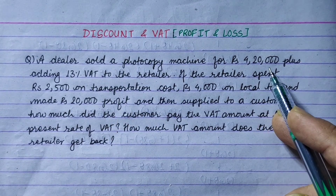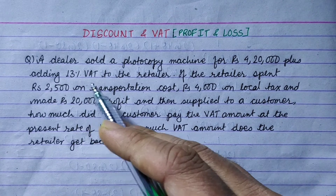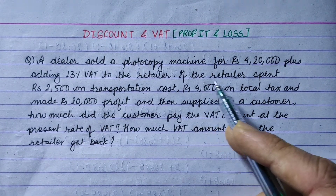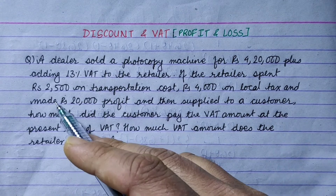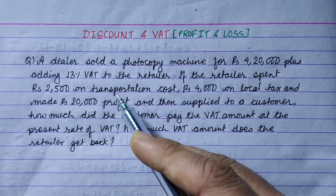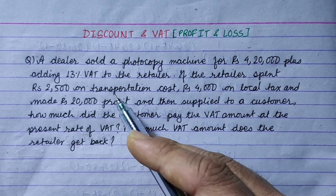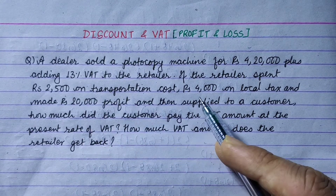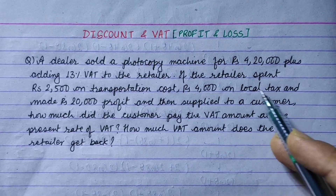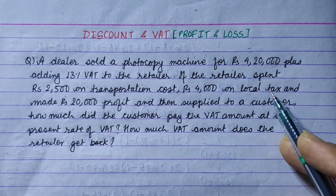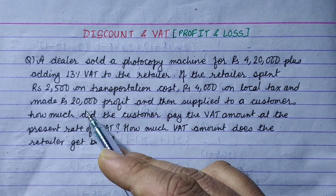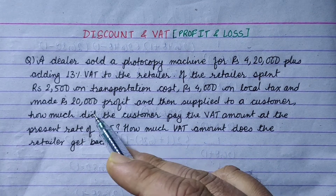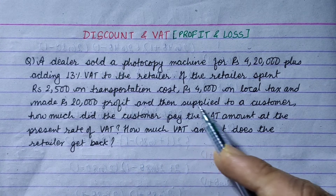The retailer, after buying the photocopy machine for 4,20,000 with 13 percent VAT, spent rupees 2,500 on transportation cost, rupees 4,000 on local tax, and made rupees 20,000 profit.